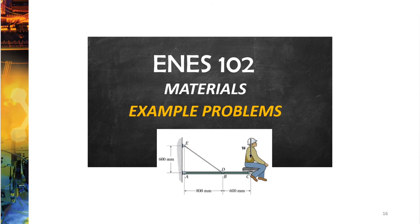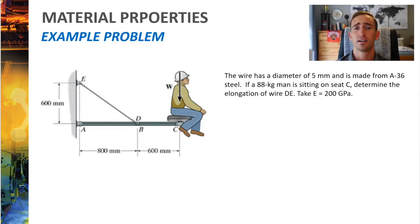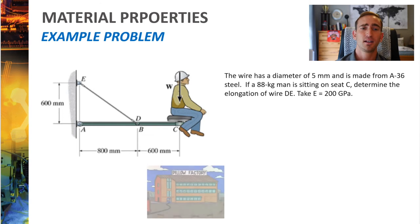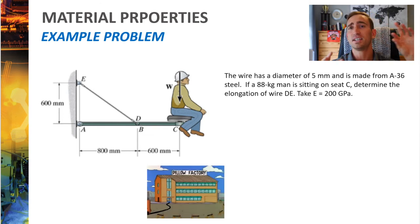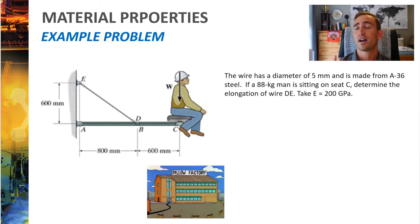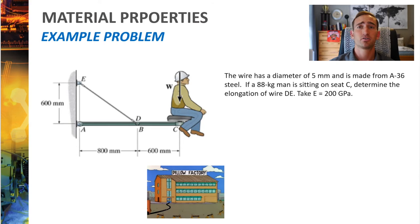Now we'll combine everything we've learned — Young's modulus, Poisson's ratio, and deformation — and apply it to an ENES 102 statics problem. The question shows a construction worker sitting on a beam ABC, with a cable DE holding everything together. We're asked to find how much the cable stretches. This is a perfect example of how material properties can be applied to a statics problem. I'll jump to a handwritten solution now.